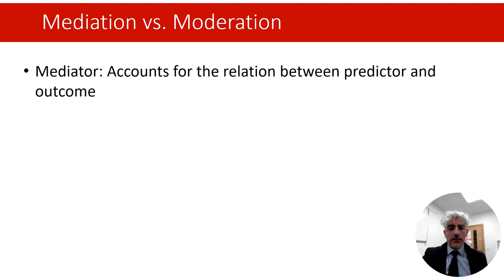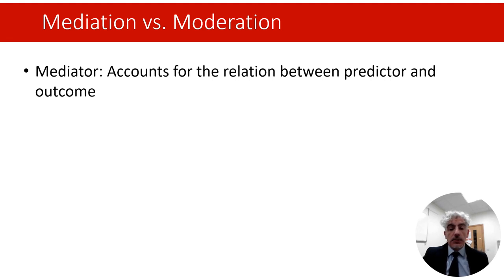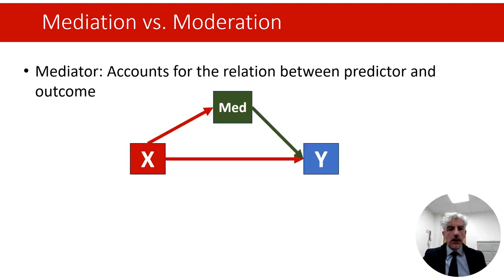I'll start by providing a definition of what is mediation and what is moderation, and what differentiates these two. A mediator is a variable that accounts at least in part for the relation between a predictor and an outcome. In other words, in mediation we assume that a predictor X influences the outcome Y indirectly, and does that by influencing a mediating variable MED, which in turn influences the outcome Y.